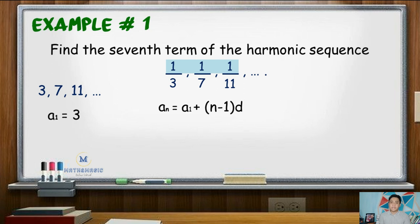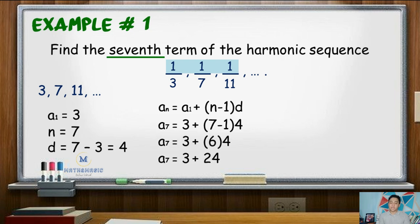So in this sequence, the first term is 3, n is 7 since we are looking for the 7th term, d or the common difference is 7 minus 3 or 4. Next, substitute these values in the formula a sub 7 be equal to 3 plus quantity 7 minus 1 times 4. 7 minus 1 is 6, multiplied by 4 is 24. So the 7th term for the denominator is 3 plus 24, or 27.